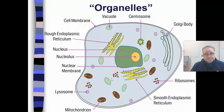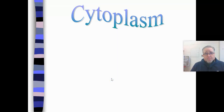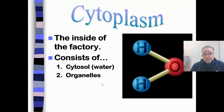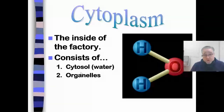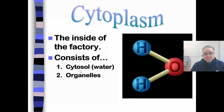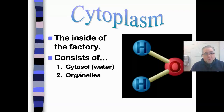We're going to start with a term called cytoplasm. The cytoplasm is just a big fancy word for the inside of the cell — or the inside of the factory. The inside basically consists of two things: water, and we have a big fancy word for that called cytosol. Cytosol means cellular liquid, which is basically water — more like a jelly, but it's mostly water.